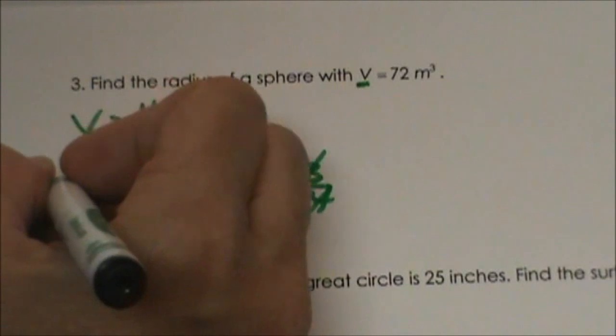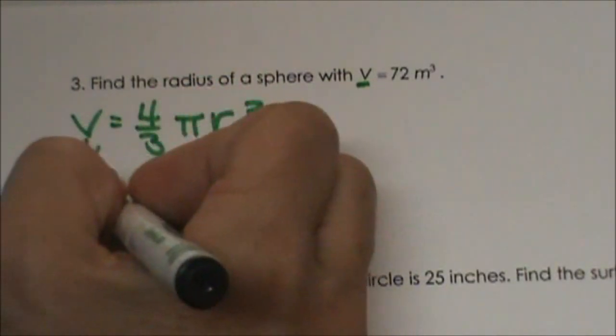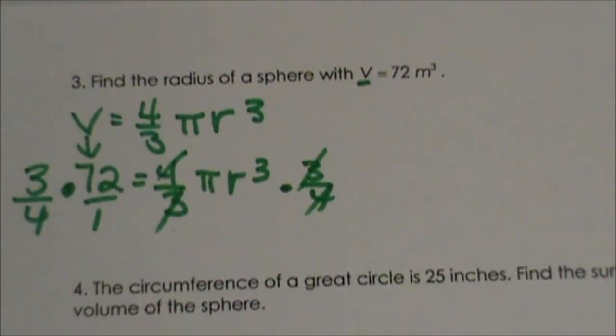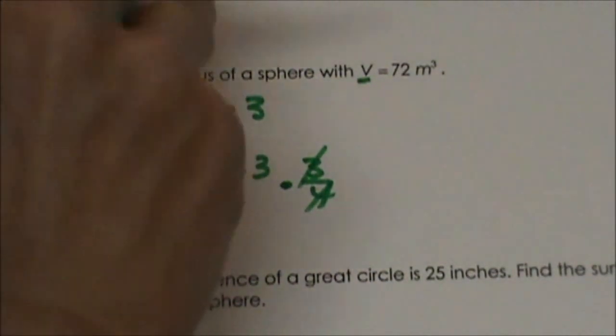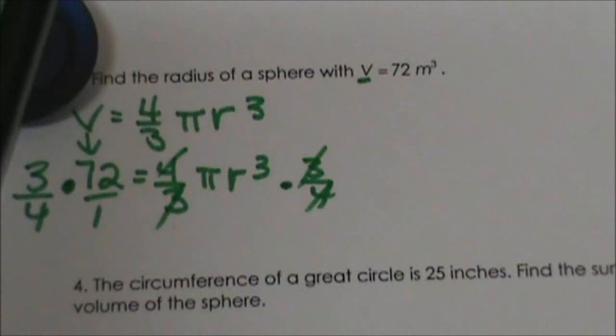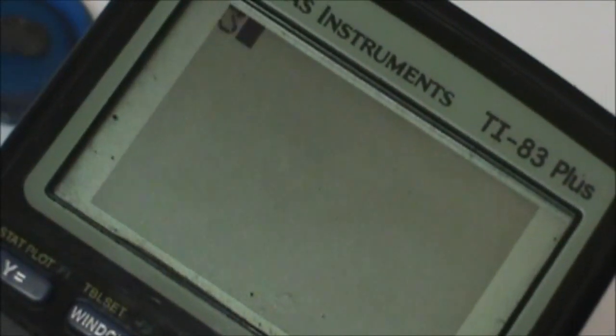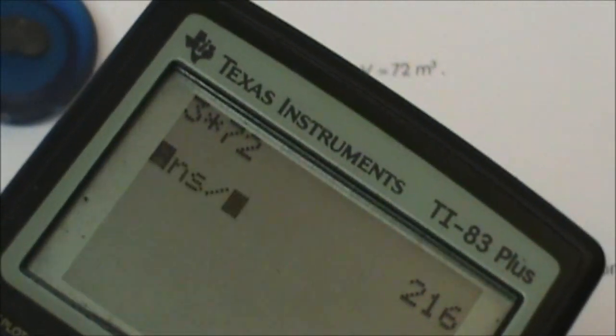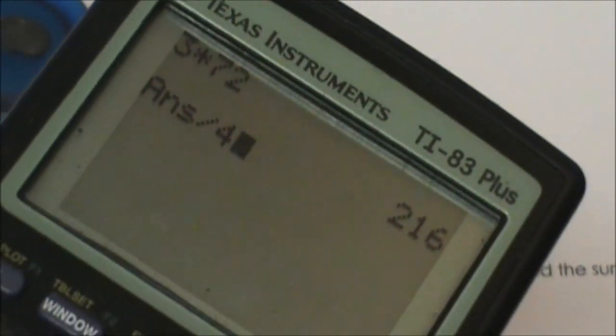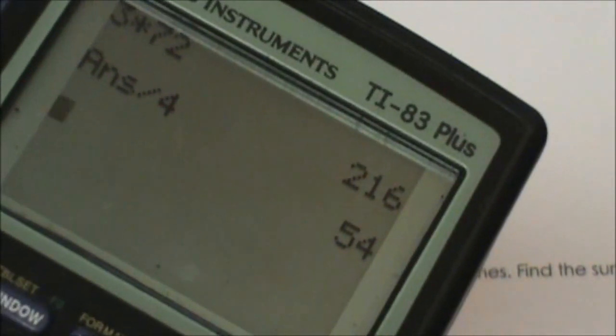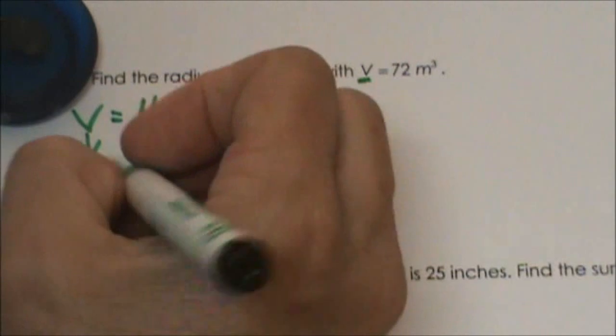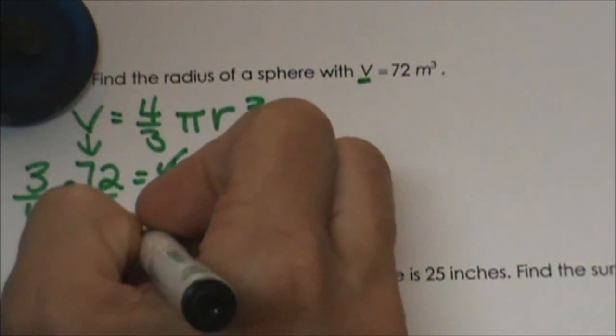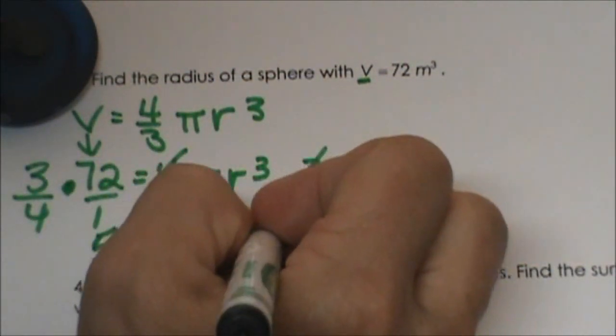We are going to multiply 72 by 3 fourths. Always whole numbers over 1 so let's multiply 3 times 72 and we are going to divide that by 4. This left side is going to simplify to 54 so we have 54 equals pi r cubed.